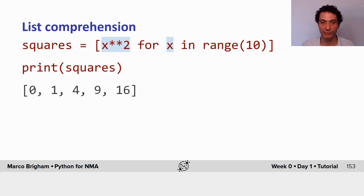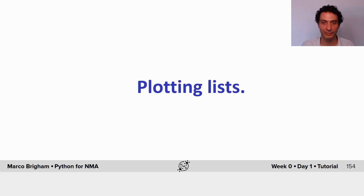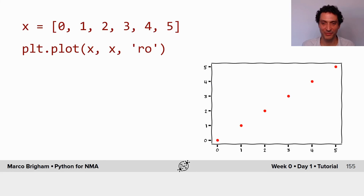This is a very tight, concise way of writing. Now that we know more about lists, let's see how to plot them. Plotting lists is very simple — you just define your lists and plot them with the plot command.